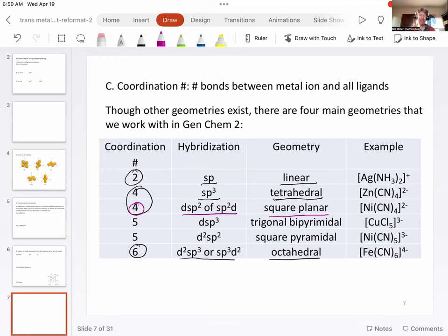Square planar has a different type of hybridization, one that I don't think we've necessarily seen, and that is dsp2, or sp2d, and we'll show an example of that on the next page. Some similarities from Gen Chem 1.